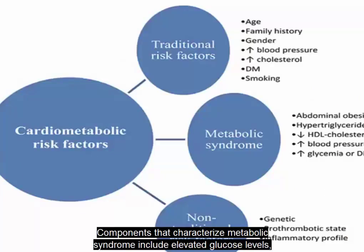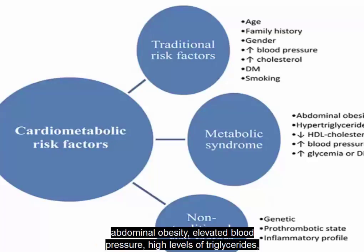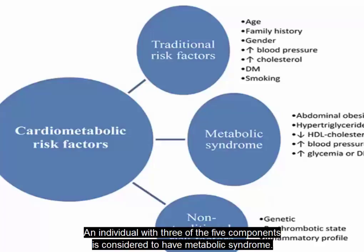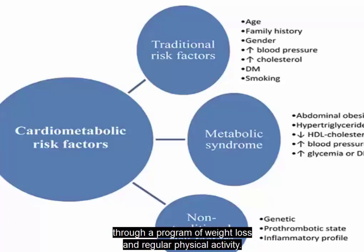Components that characterize metabolic syndrome include elevated glucose levels, abdominal obesity, elevated blood pressure, high levels of triglycerides, and decreased levels of high-density lipoproteins. An individual with three of the five components is considered to have metabolic syndrome. Overweight individuals with metabolic syndrome can prevent or delay the onset of diabetes through a program of weight loss and regular physical activity.